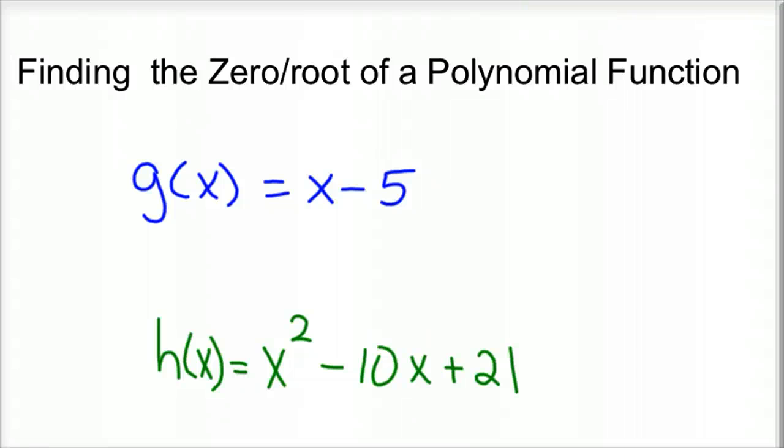This is a video on finding the zeros or roots of a polynomial, and I have a variety of examples coming up. The first one we'll start with is g(x) = x - 5. So what is a zero? What is a root? They're the same thing, and the words are often used interchangeably, but a zero is what would make that function zero.